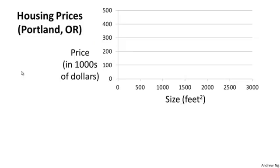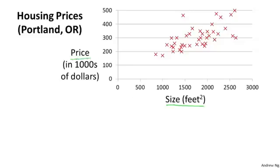Let's use our motivating example of predicting housing prices. We're going to use a dataset of housing prices from the city of Portland, Oregon, and here I'm going to plot my dataset of a number of houses that were of different sizes that were sold for a range of different prices. Let's say that given this dataset, you have a friend that's trying to sell a house, and let's say your friend's house is of size 1250 square feet, and you want to tell them how much they might be able to sell the house for.